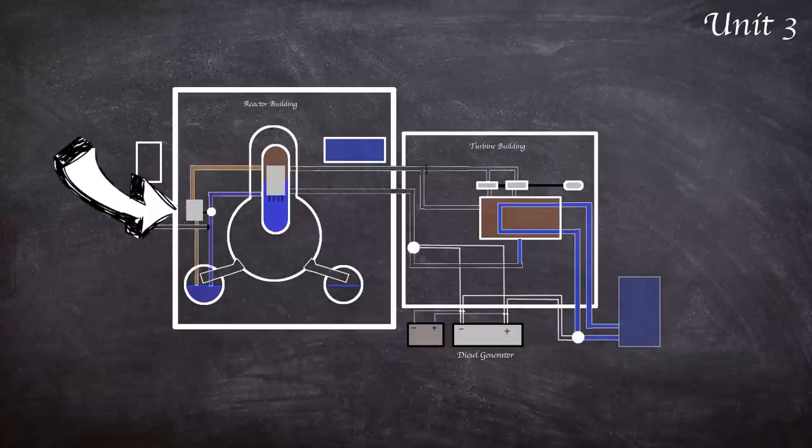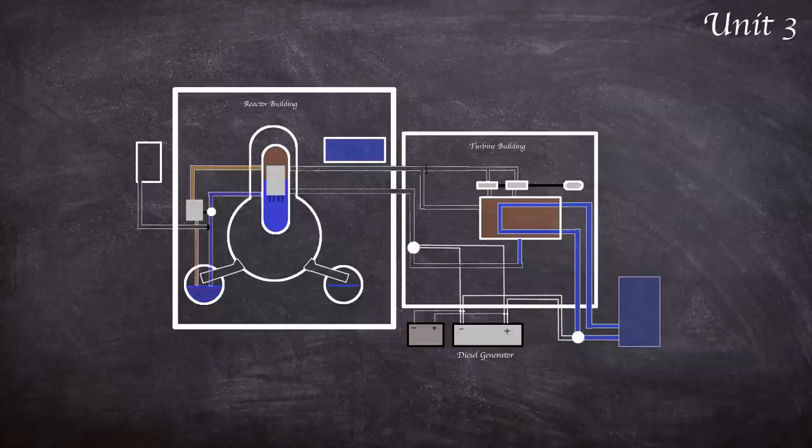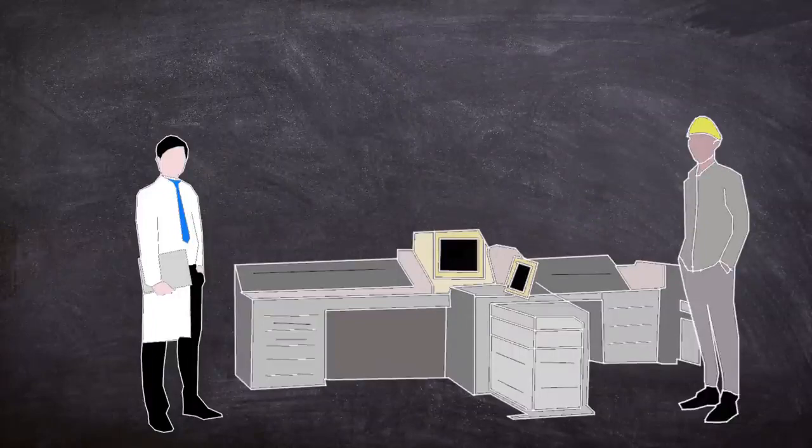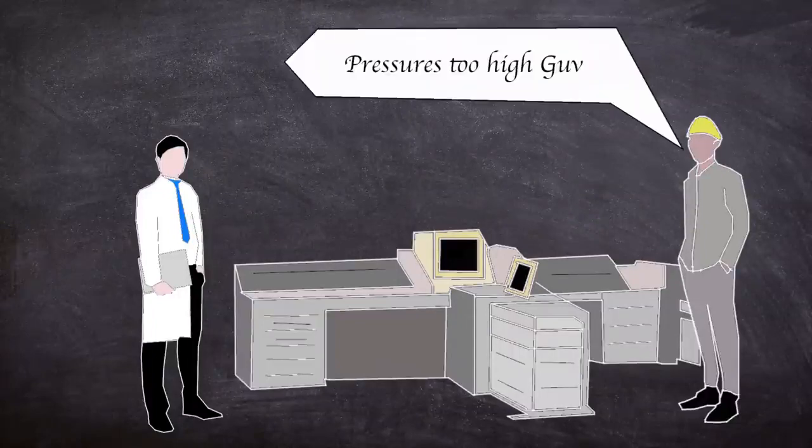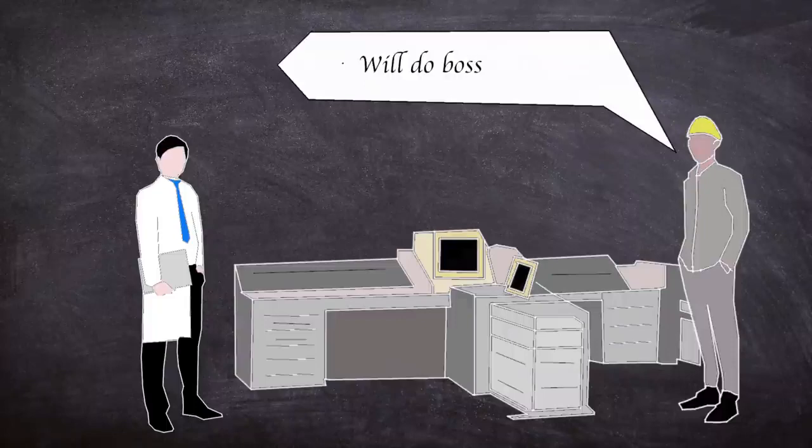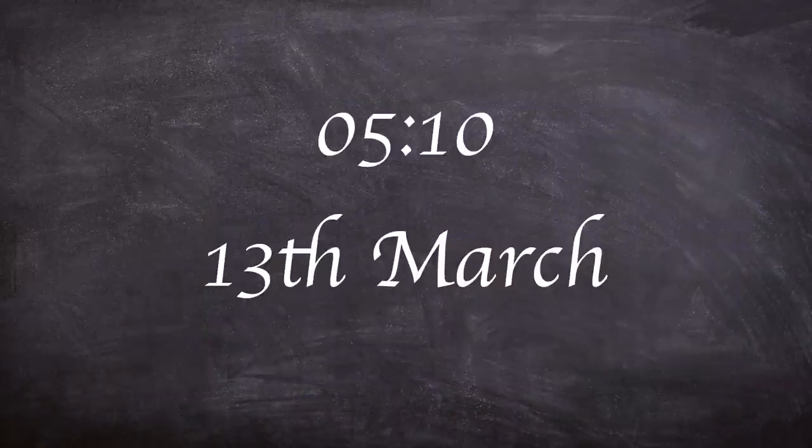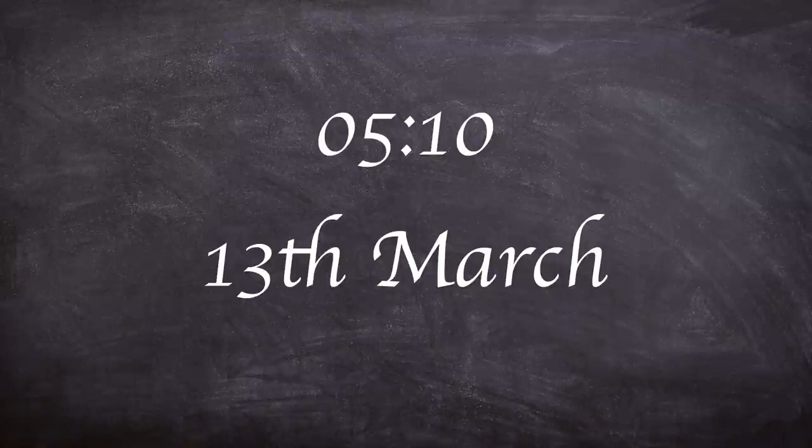Fearing the turbine-driven high pressure cooling system would fail with lowering steam, unit 3 was planned to be hooked up to an external water pumping source. To facilitate this, the high pressure system needed to be switched off for valves to be opened. The valves could not be opened. Whilst operators struggled for 45 minutes, pressure within the reactor rose, disallowing the external water pumping option. Painting themselves into a corner, operators attempted and failed to restart the high pressure system, essentially leaving unit 3 with no cooling system at all.